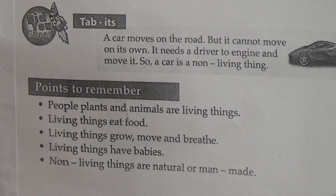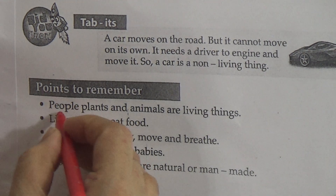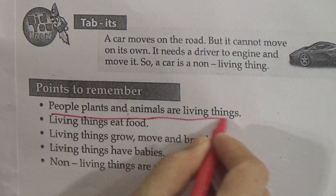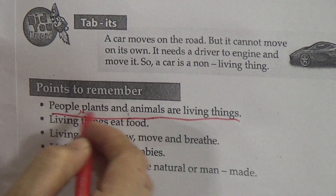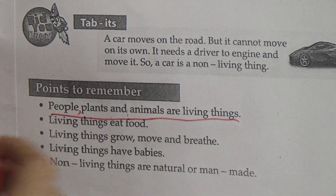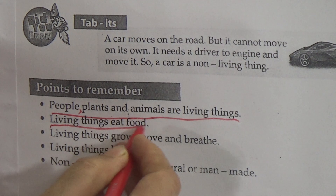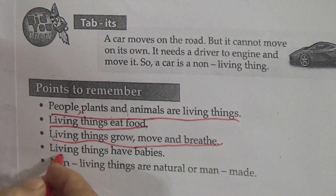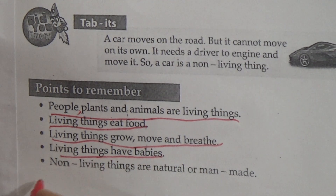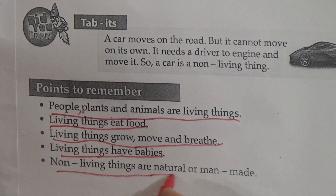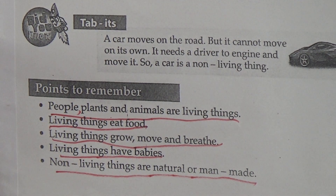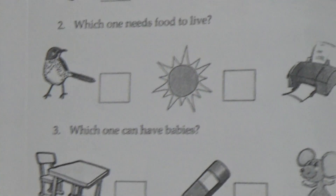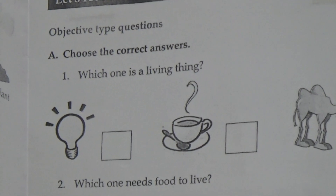Points to remember from the chapter — memorize these. People, plants, and animals are living things. Living things eat food, grow, move, and breathe. Living things have babies. Non-living things are either natural or man-made. Now come to the next page, page number 16, which will be your homework.